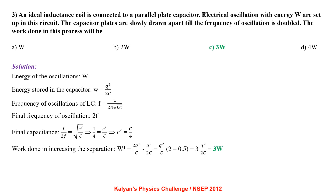An ideal inductance coil is connected to a parallel plate capacitor. Electrical oscillations with energy W are set up in this circuit. The capacitor plates are slowly drawn apart till the frequency of oscillation is doubled. Energy stored in the capacitor is Q²/2C. Frequency of oscillations F equals 1/(2π√LC). Final frequency is 2F, so final capacitance C' equals C/4. Work done: W' equals 2Q²/C minus Q²/2C which comes out to be 3Q²/2C, i.e. 3 times W.